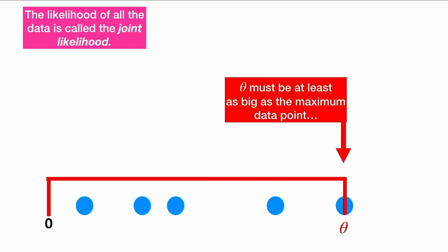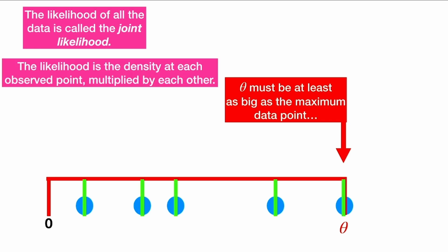The likelihood of all the data is called the joint likelihood. The likelihood is the density at each observed point, and we multiply all of these densities by each other.